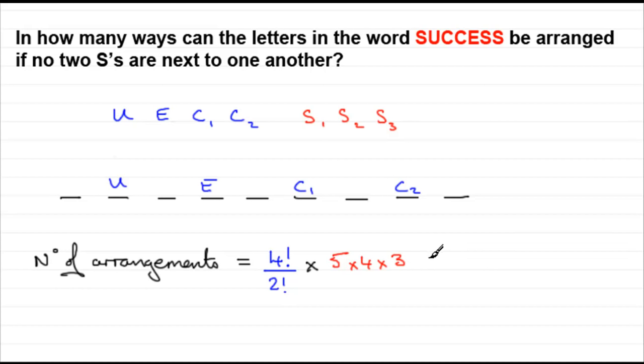But also with this, we've got to be very careful because the S's are different. They're different at the moment because they've got subscripts on. But if you take those subscripts away, any of these arrangements can be rearranged amongst themselves three factorial ways because of the repetition of the S. So we've got to divide this by three factorial. So a bit trickier than the first question purely because we've got the repetition. Anyway, if you work that out, hopefully you'll get 120.